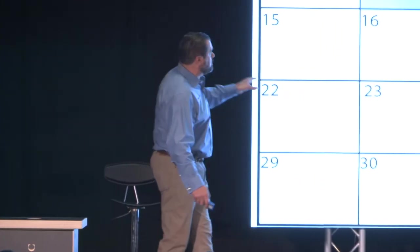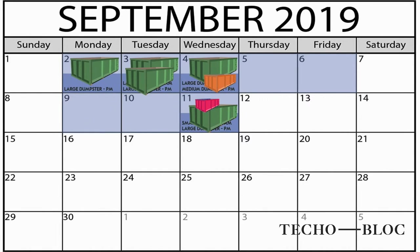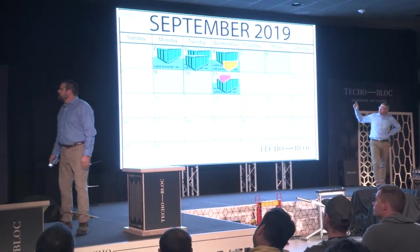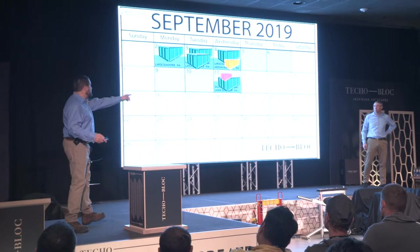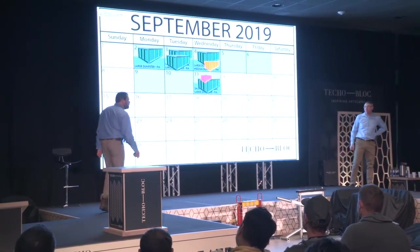Let's drill down on this because it's important. Dumpster delivery is Monday, the first day, in the afternoon — because we had to lay out, check all our grades, and set our pins, so we didn't really start digging until late morning and we don't want it in our way. On Tuesday, that dumpster goes out and another one comes in. On Wednesday, a large dumpster comes in, and then a medium dumpster comes in as well in the afternoon.